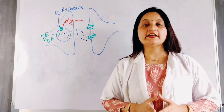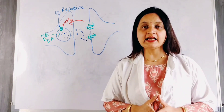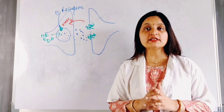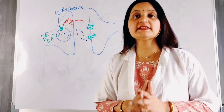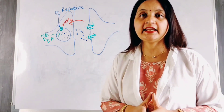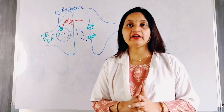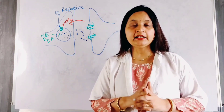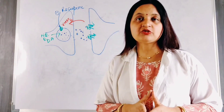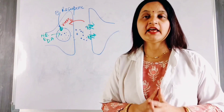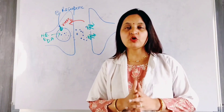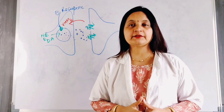In this session, we have discussed the mechanism of action, uses, and adverse effects of central sympatholytic agents — clonidine and methyldopa — the ganglion blocker trimethaphan, and reserpine. Thank you so much for watching.